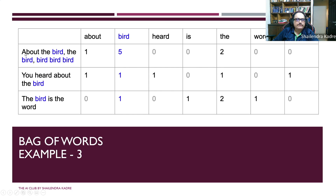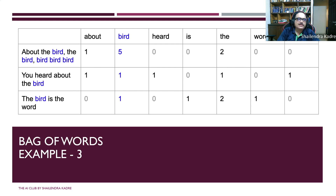Another example has three sentences about a bird. Sentence one: 'the bird bird bird bird' — bird appears four times. Sentence two: 'you heard about the bird'. Sentence three: 'the bird is the word'. We first select the unique words as headings. For sentence one, bird is repeated five times so its entry is five, and 'the' repeats twice so entry is two. All sentences are decoded similarly. This is a third example of bag of words representation.